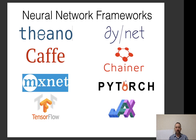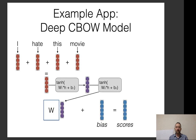So neural network frameworks — there are a lot of them, as we talked about before: Theano, Caffe, MXNet, TensorFlow, DyNet, Chainer, PyTorch, JAX, among many others. And we're going to make another one. The reason why is not to usurp TensorFlow or PyTorch from their throne, but rather to understand what goes on under the hood in these neural network toolkits that you're probably going to be using in your assignments. Perhaps the best way to start is by thinking about an example application for which we would like to train a neural network model, and what needs to be implemented within a toolkit to make this realizable.